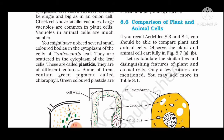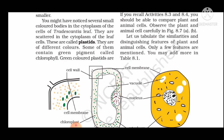You might notice several small colored bodies in the cytoplasm of the cells of a Tradescantia leaf, scattered in the cytoplasm. These are called plastids. Plastids are of different colors; some of them contain a green pigment, making them appear green.